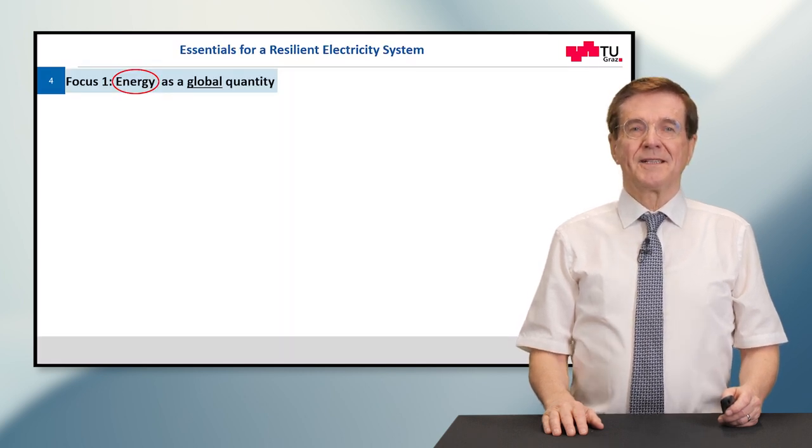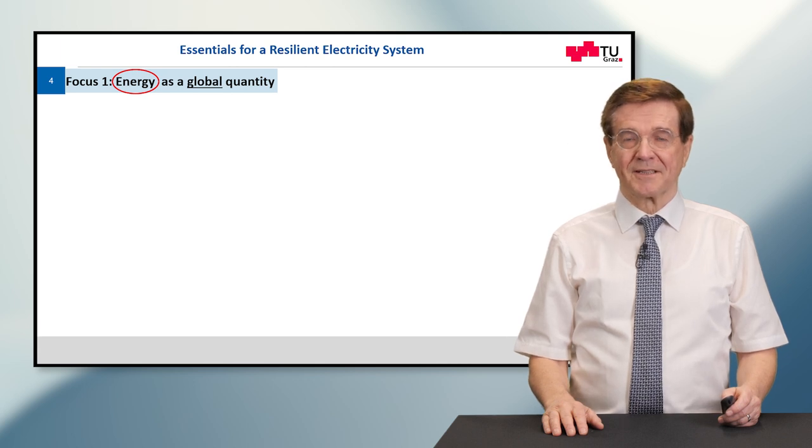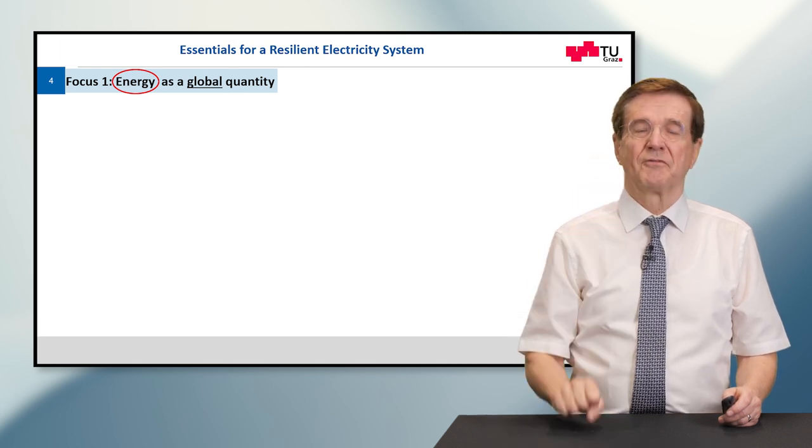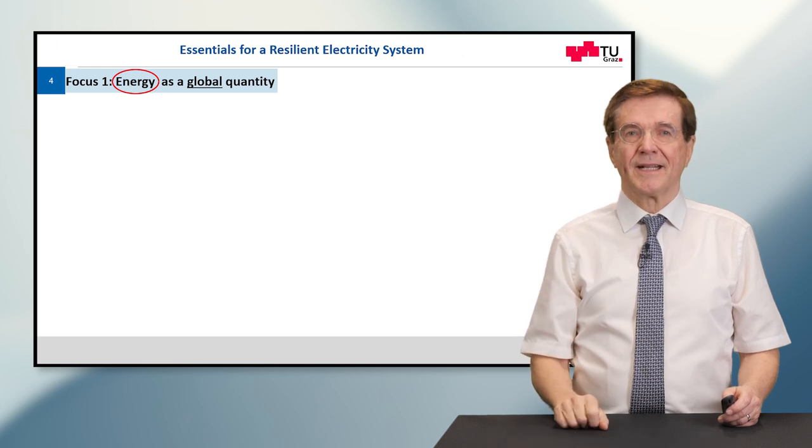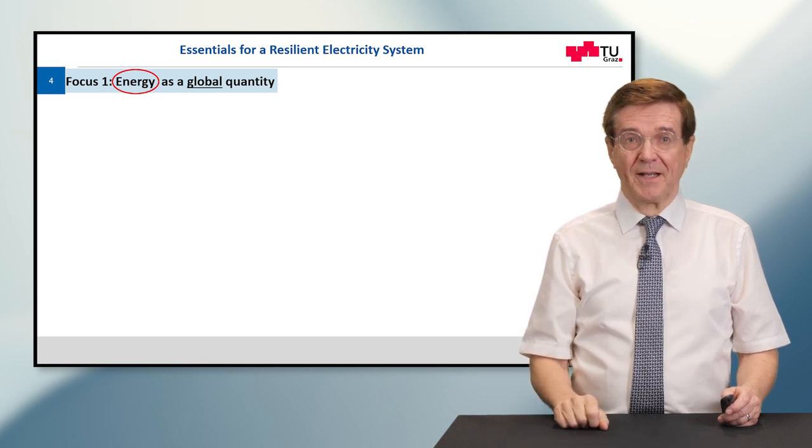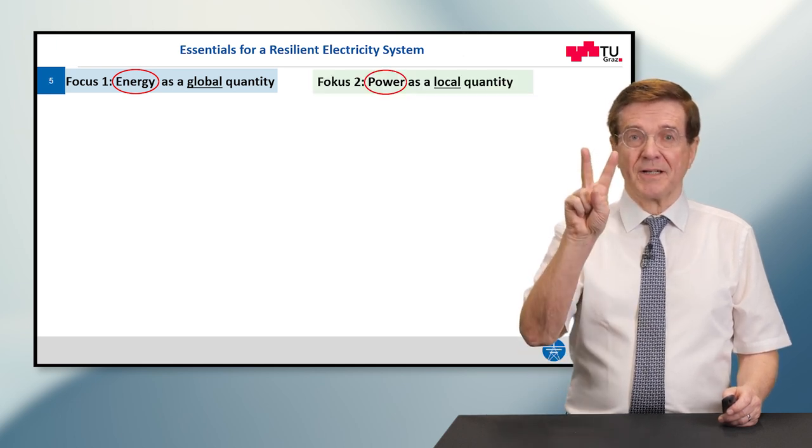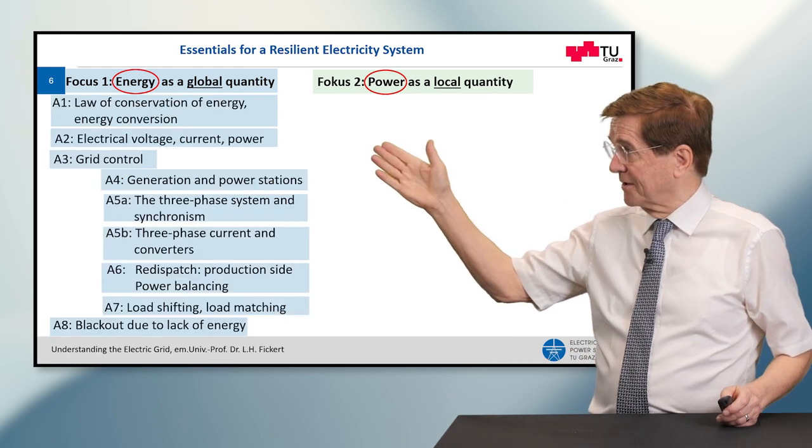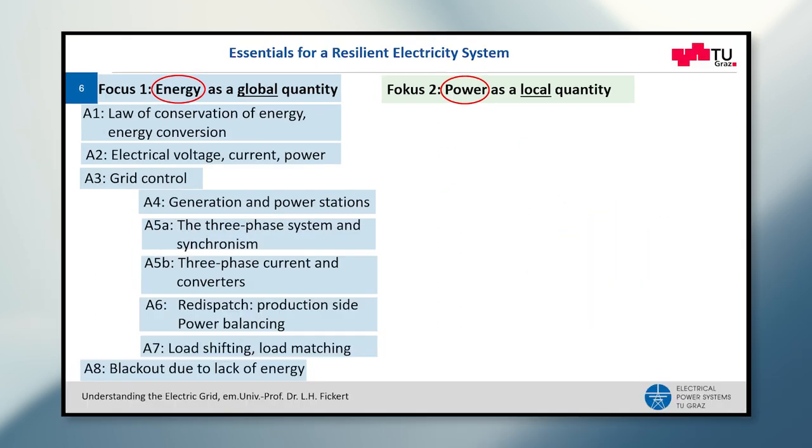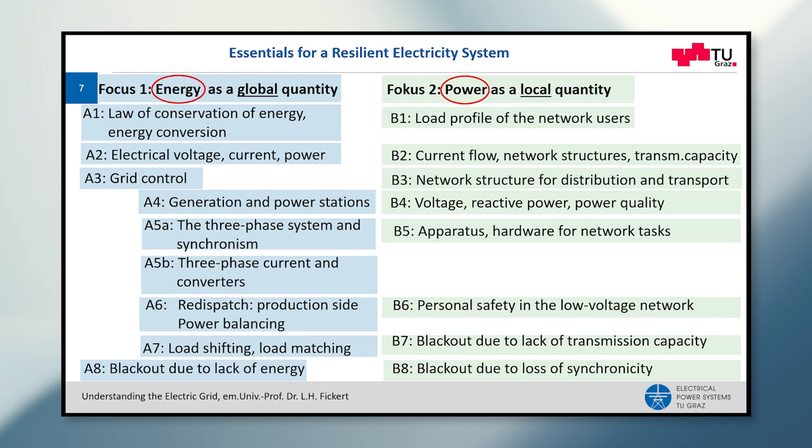The essentials for resilient electricity systems are two focuses. Focus number one is energy as a global quantity and focus number two is power as a local quantity. And for the sake of completeness, I show you the full content of my lecture. Today, we will focus on the three-phase system and the synchronism.